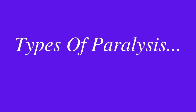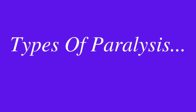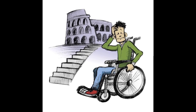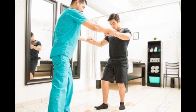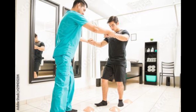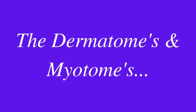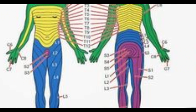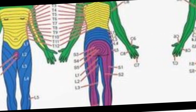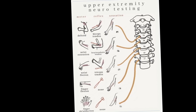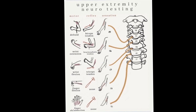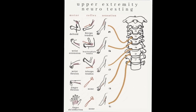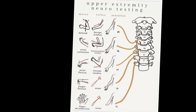Types of paralysis: Tetraplegia, or quadriplegia, is when all four limbs are affected due to cervical damage. Paraplegia is when both legs get paralyzed due to injury in the thoracic and lumbar spine. Before discussing symptoms, we will look at dermatomes and myotomes. A dermatome is an area of skin mainly supplied by a single spinal nerve. A myotome is defined as a group of muscles innervated by a single spinal nerve root. Myotome testing is an essential part of the neurological examination.